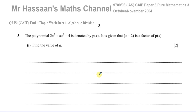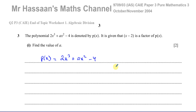This question is about algebraic division. It tells us the polynomial 2x cubed plus ax squared minus 4 is denoted by P of x. So P(x) = 2x³ + ax² − 4. It is given that x minus 2 is a factor of P(x). Find the value of A.